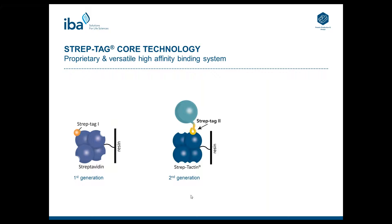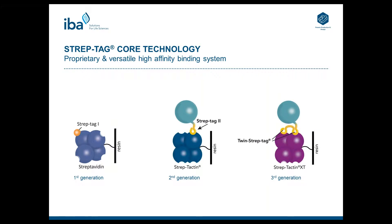However, it is not really suitable for high affinity applications such as SPR or low abundant protein. The system was further improved. First, the Twin Streptag was engineered, which consists of two Streptag2 motifs in series. Due to this avidity effect, the binding affinity to Streptactin increases, dependent on the recombinant protein, up to 1000-fold.